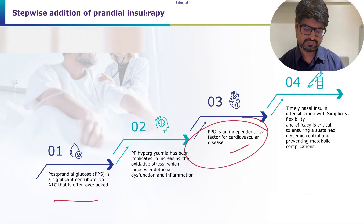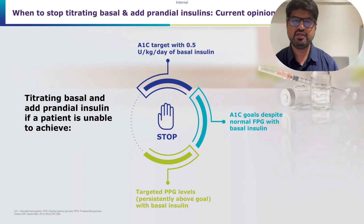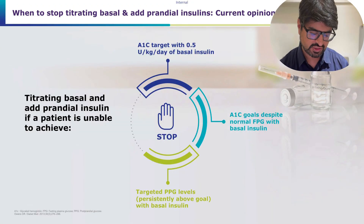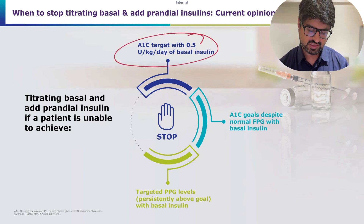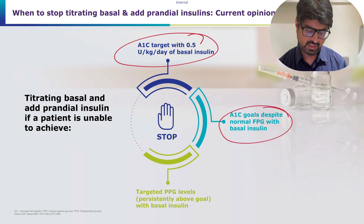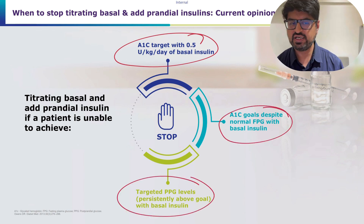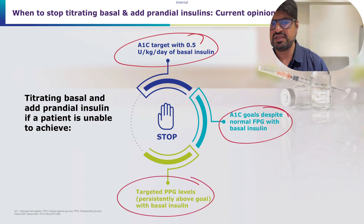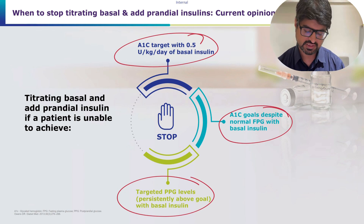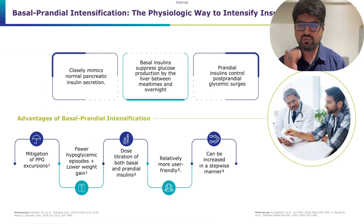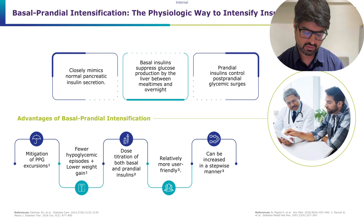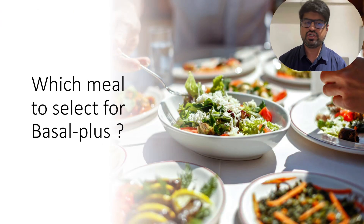To summarize the criteria: consider basal plus therapy when basal insulin exceeds 0.5 units/kg/day, when HbA1c goal is not achieved despite fixed fasting, or when post-prandial sugars are consistently high. All three conditions may indicate the need for adding a bolus insulin.